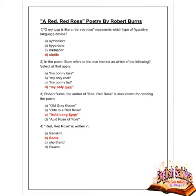After the fourth section we move to the poetry section. The first poem is A Red Red Rose by Robert Burns. First question: 'O my love is like a red red rose' — which type of figurative language device does this represent? Options are symbolism, hyperbole, metaphor, and simile. Option D is correct — simile.